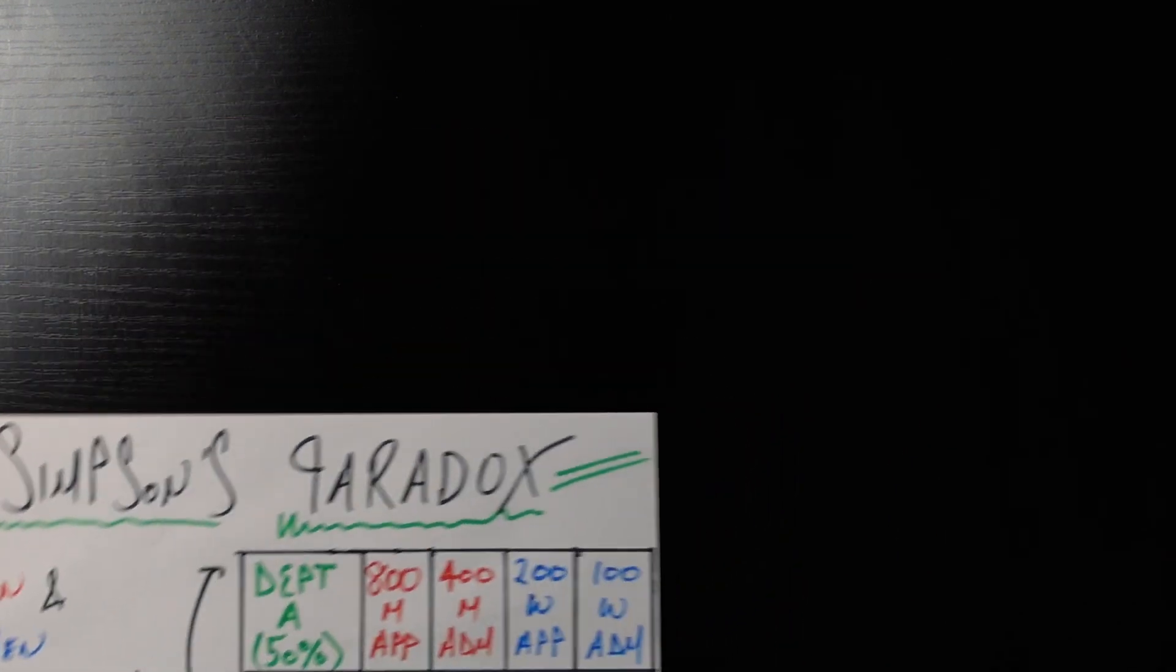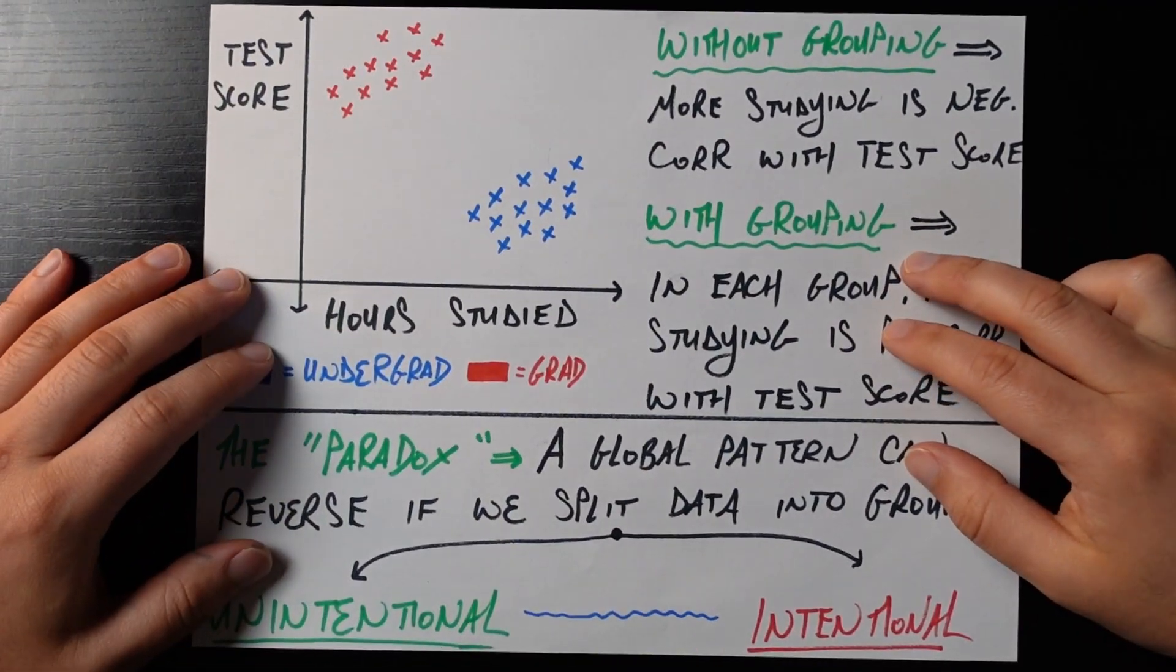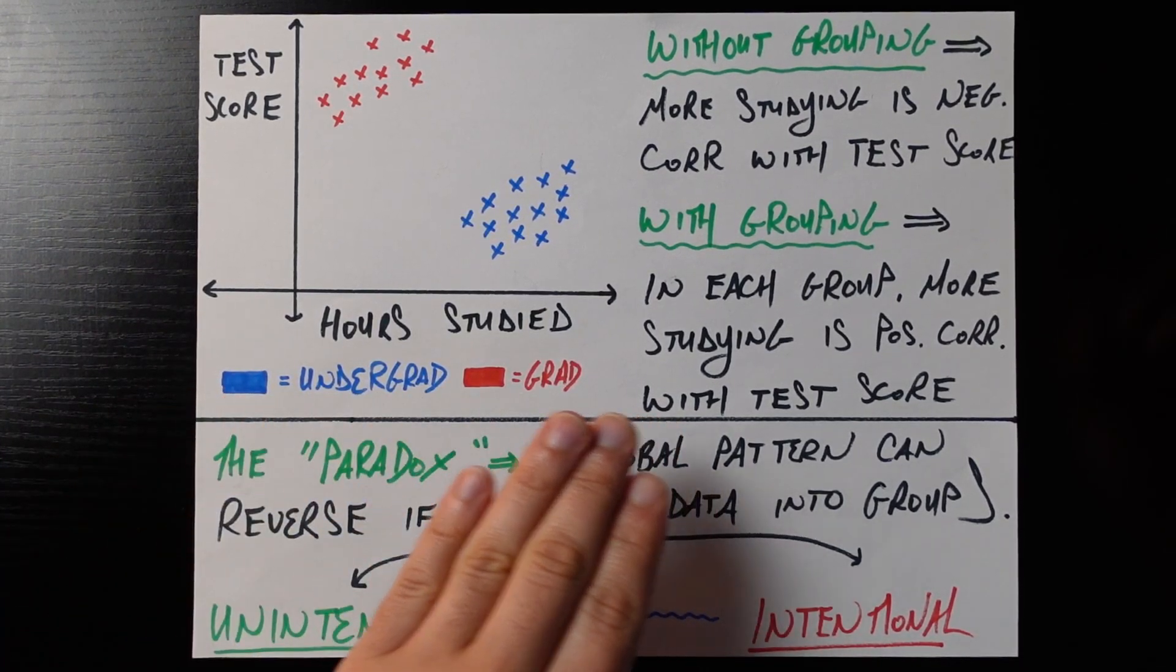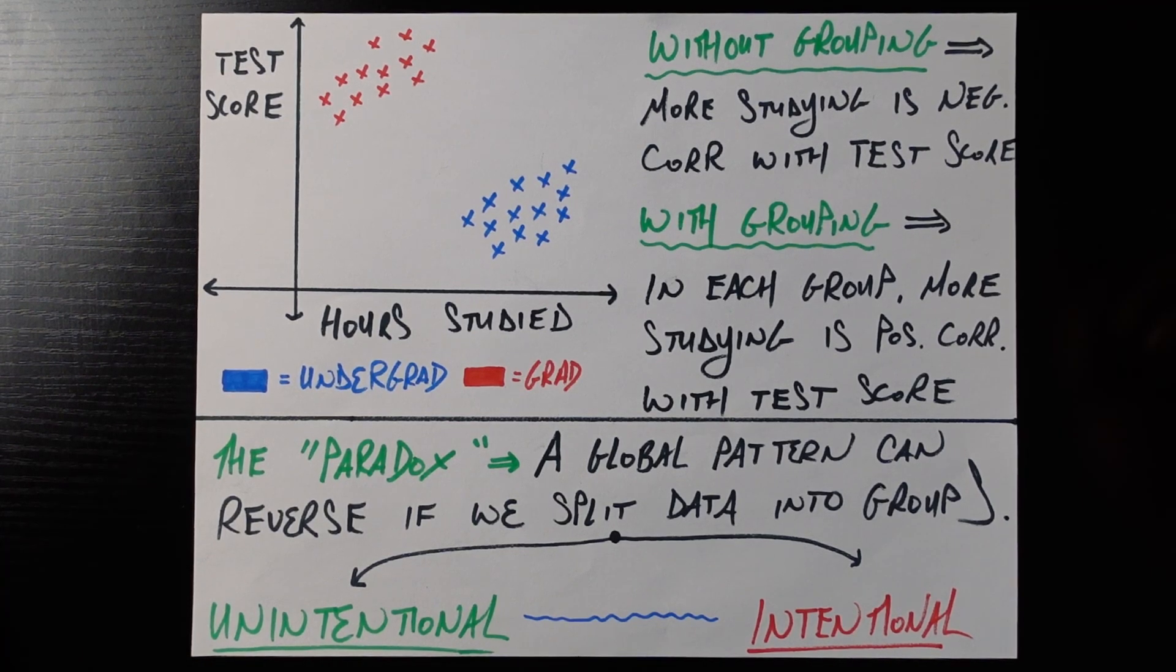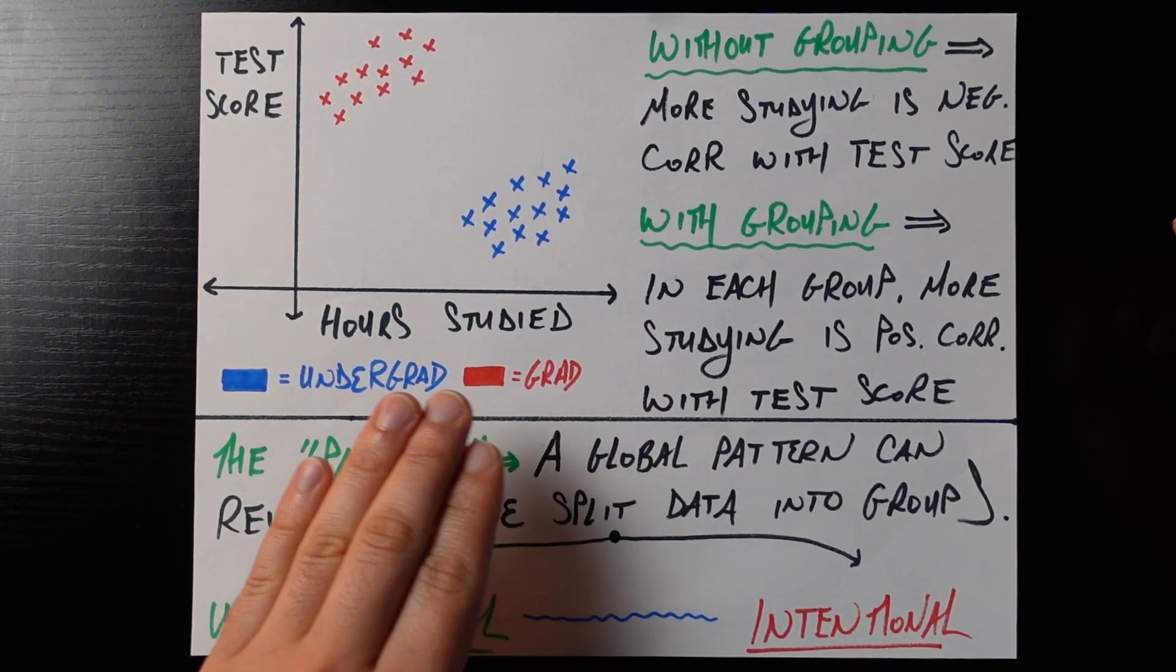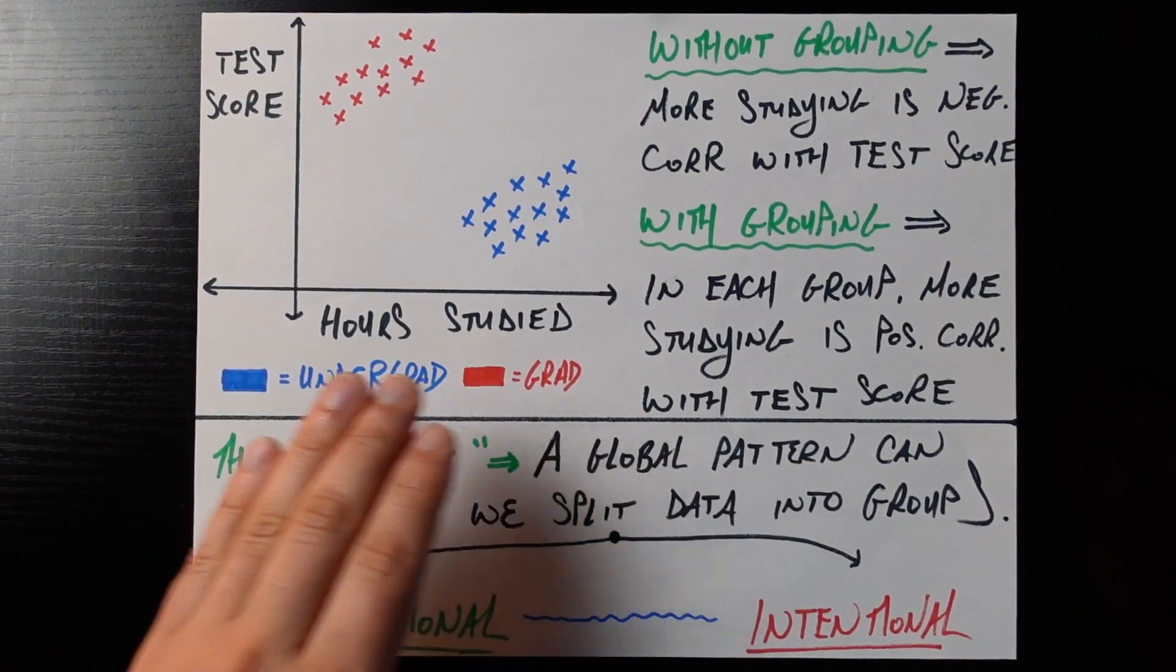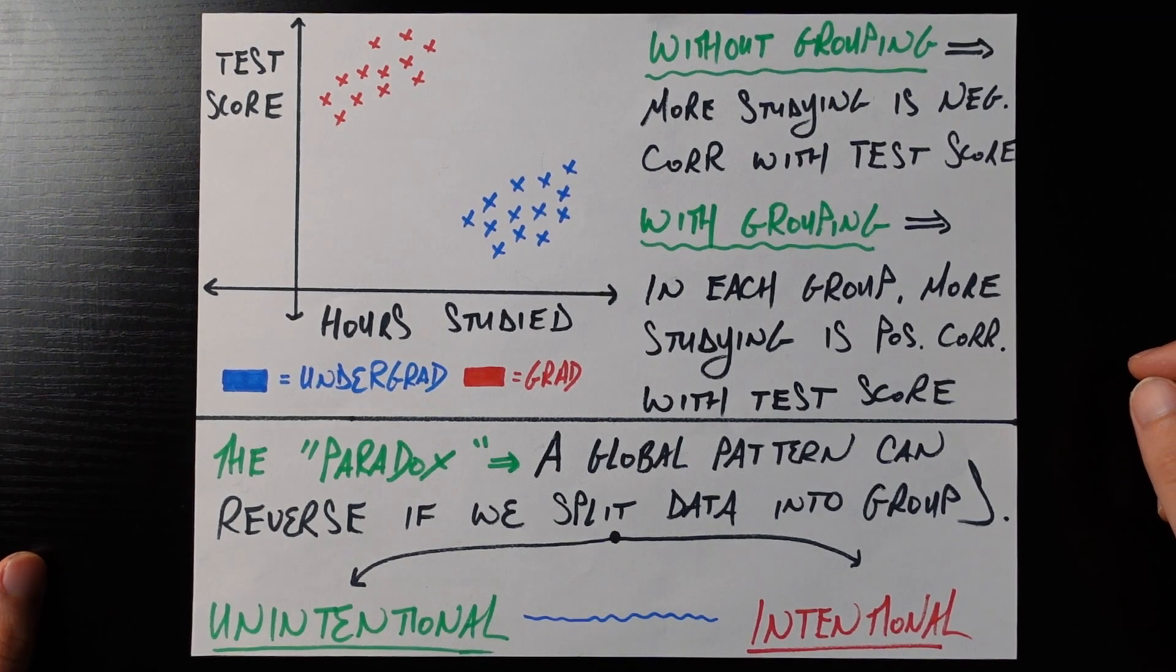And so let's look at one more example here using continuous data instead of discrete variables like admitted or not admitted. Let's say that we ask a group of undergraduates and a group of graduate students to take an exam. Let's say a mathematics exam. Now we're just going to assume here the undergraduate students are still learning. They're still trying to pick up the basic skills, whereas the graduate students might have more refined, more honed skills with their years of experience in studying.